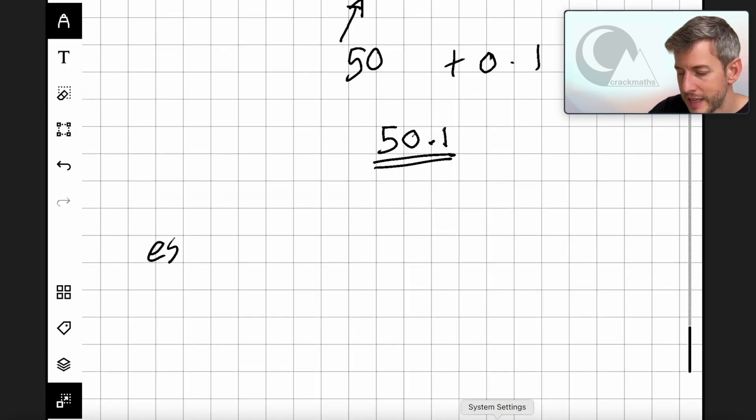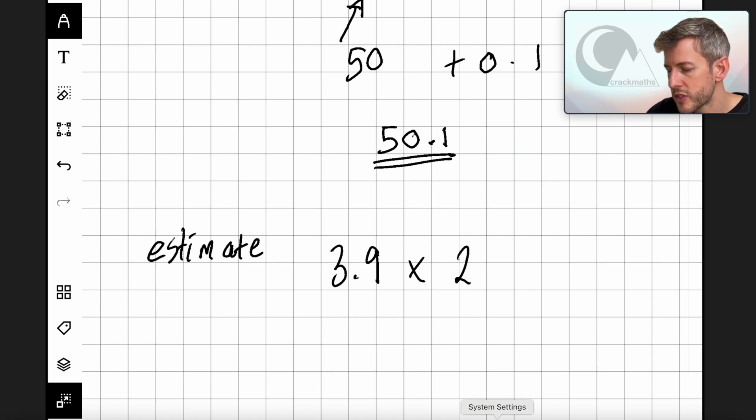Let's say estimate 3.9 multiplied by 2.6. So 3.9, we round this, and that rounds up to 4. 2.6, we round this, and it rounds up to 3. So we can say that 3.9 times 2.6 is going to equal roughly 12. So there we go. We can see that the estimating in this example had a lot more purpose to it than when we were adding. Let's try something bigger.